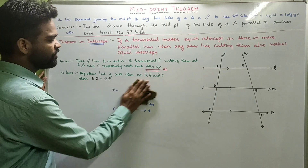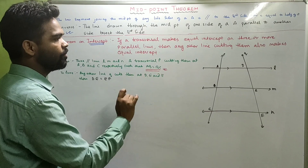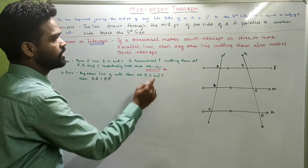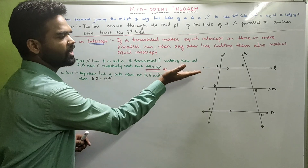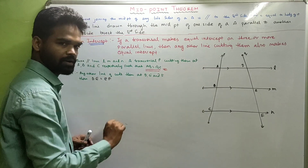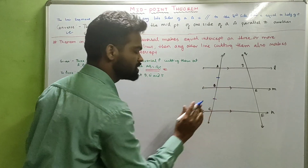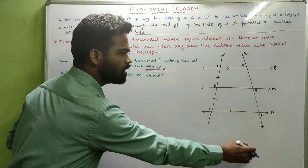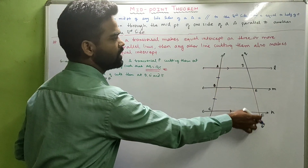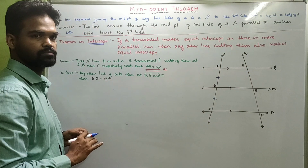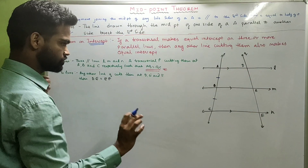So, if a transversal makes equal intercepts on three or more parallel lines, then any other line cutting them also makes equal intercepts. Which means if we have parallel lines L, M, N and transversal P where AB equals BC, then any other transversal will also make equal intercepts — DE will equal EF.